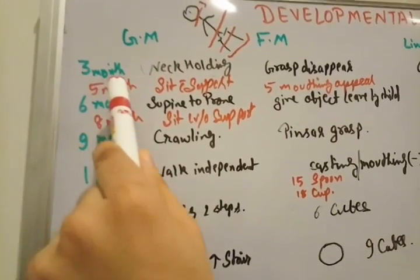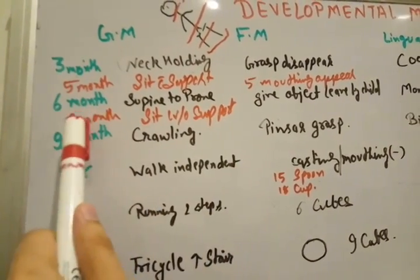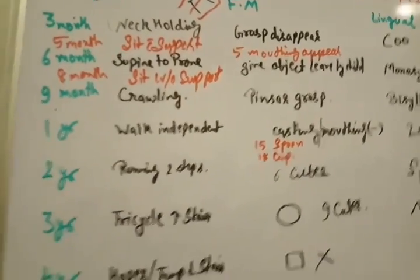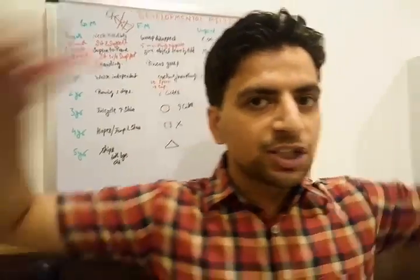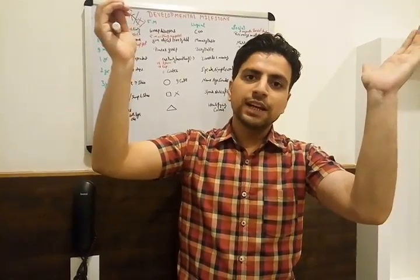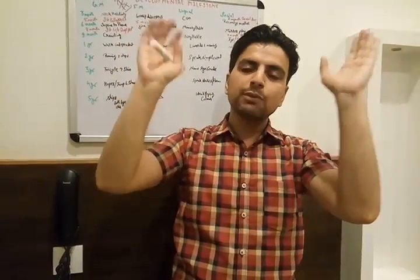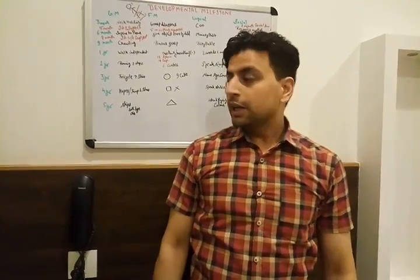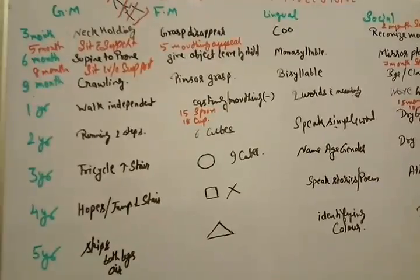Now I am going to explain you some important points. Between 3 and 6 month, there is 5 month - child sits with the help of support, with the help of pillow or something. And 8 month, he is able to sit without support. Between 9 and 1 year, at 11 months - see 11 this way - mother holds his one hand, father holds his one hand, then he is able to walk. At 12 months, 1 year, he walks independently.